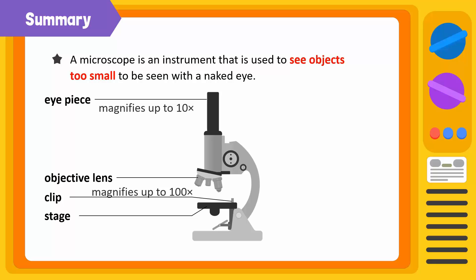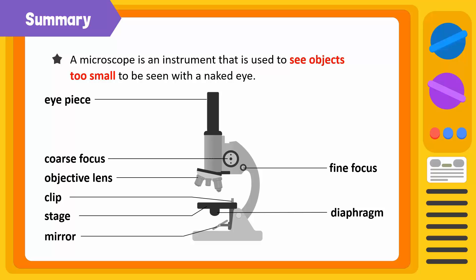There are three objective lenses with different magnification powers. The coarse focus is used to change the focus of the lens. The fine focus is used to clear the focus further. We adjust the mirror to reflect the light onto the stage. The diaphragm controls the amount of light that reaches the specimen. The base and the arm of a microscope are there to hold it up.